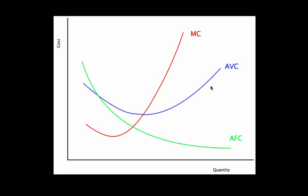Average variable cost is just variable cost divided by output. In this case, I'm dividing a fixed number by more and more output, which is why average fixed cost is just falling — I'm spreading out that fixed cost among more and more units. So as soon as I produce a million units, my average fixed cost is a dollar. Average fixed cost is simply: what is my fixed cost per unit?